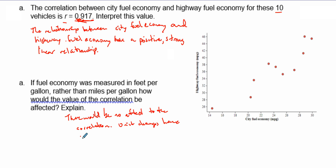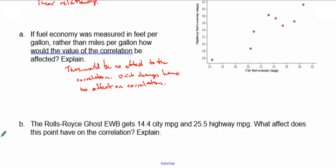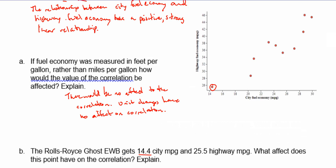Another question: a Rolls-Royce Ghost EWB gets 14.1 city miles per gallon and 25.8 highway miles per gallon, and that point is right there on the scatter plot. What effect does this point have on the correlation?